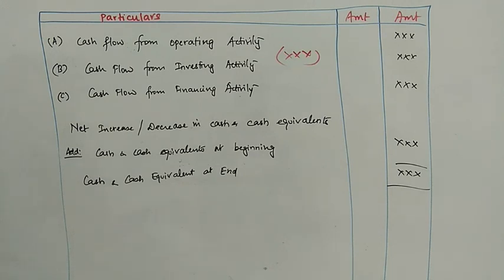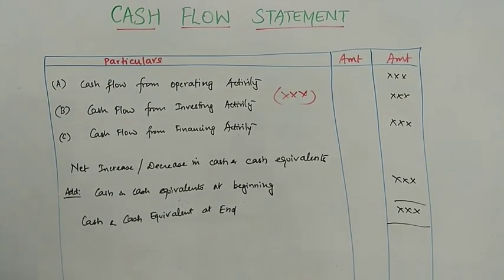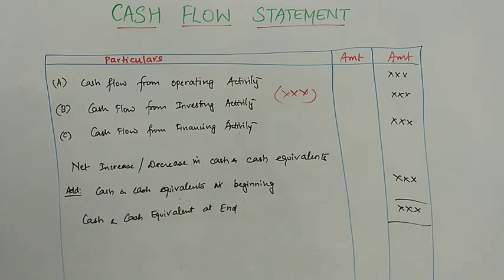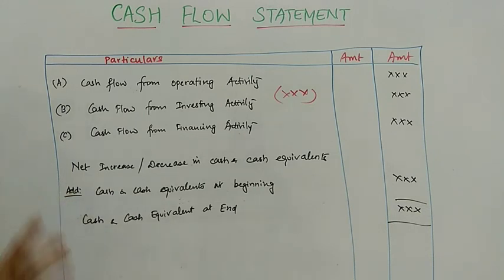To prepare the cash flow statement, you are typically given a balance sheet. The balance sheet has two years — for example, 2017 and 2018, with two columns. Sometimes there is also a P&L account provided. From those two balance sheet columns, the cash flow statement is prepared. You need to know the cash flow statement well; otherwise, your answer will not be complete. If you know the balance sheet, then you can prepare the cash flow statement, and the figures should tally.